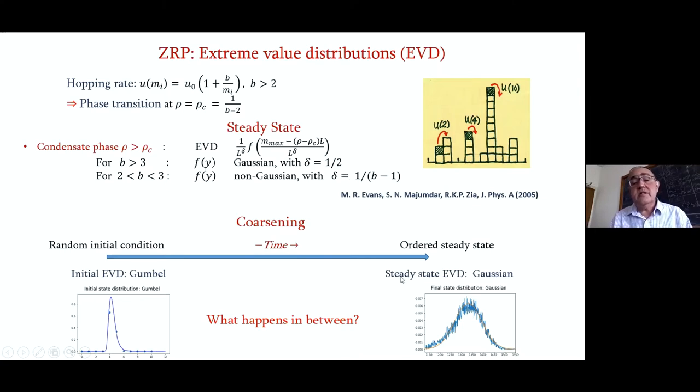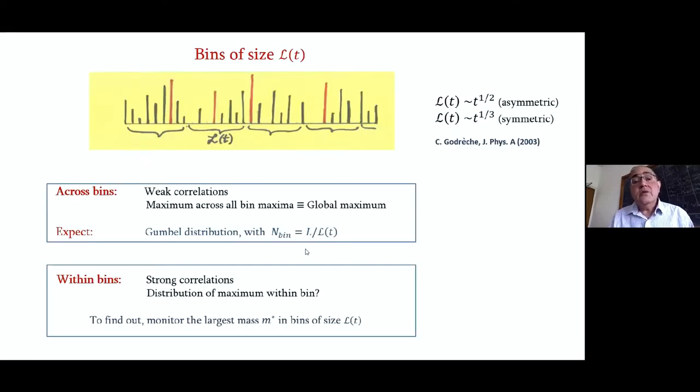Here is an illustration of what it is. Here's the initial condition coarsening going to the final steady state. We're going from the well-known Gumbel distribution, which describes uncorrelated variables, to something that is correlated, which is the Gaussian in this case. What we'll do is we'll think about bins of size L(t) and we'll ask for the maximum within each bin. That is depicted in red here. The rest are not the largest. If we look across bins, there are very weak correlations. So if we look at the maximum of all the maxima, then clearly we'll get the largest value of the mass in the full system. That ought to be distributed Gumbel-wise because there are only weak correlations between these. But within bins, there are strong correlations. And one could ask, what is the distribution of the maximum within the bin?